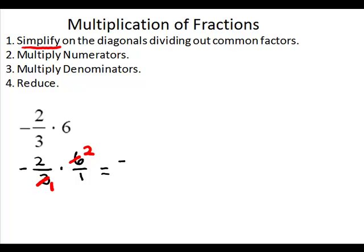And now we will multiply across. So we'll multiply numerators. 2 times 2 is 4. And multiply denominators. 1 times 1 is 1. And we can simplify. It's still going to be negative. But 4 divided by 1 gives us 4.